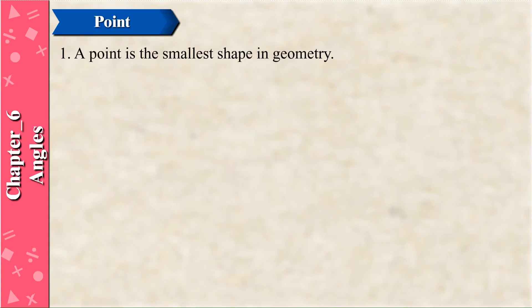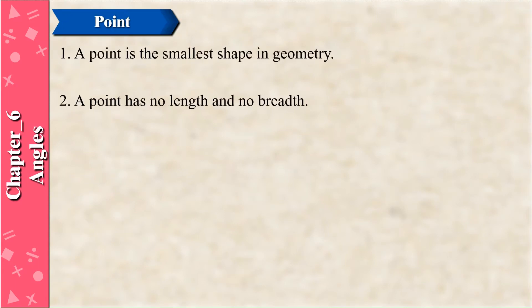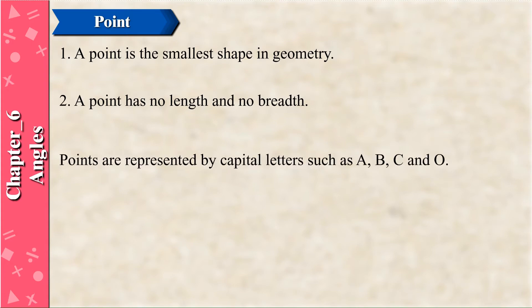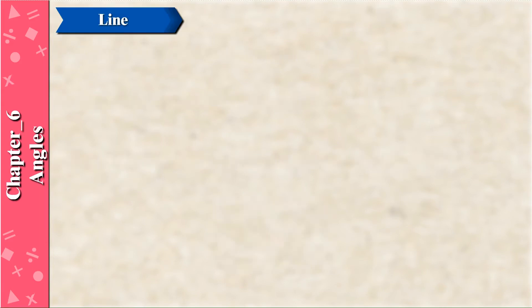A point is the smallest shape in geometry. A point has no length and no breadth. Points are represented by capital letters such as A, B, C, and O. A straight figure having no end points is called a line.